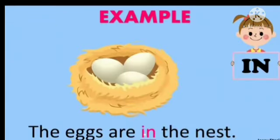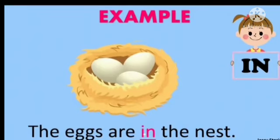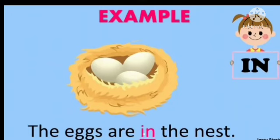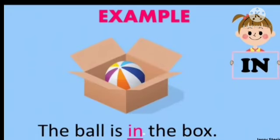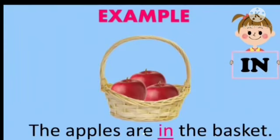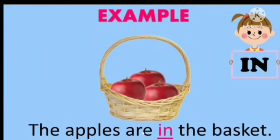Let's talk about 'in' first. Can you see three eggs? Where are they lying? They're inside the nest — the eggs are in the nest. Can you see the ball? Where is the ball lying? The ball is in the box. Can you see the apples? The apples are in the basket.